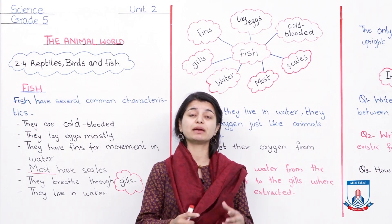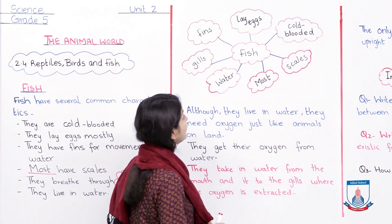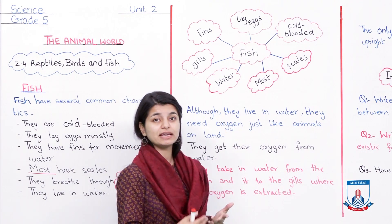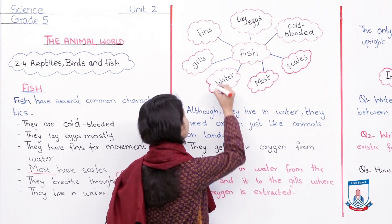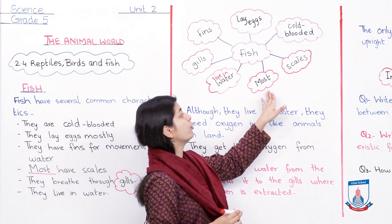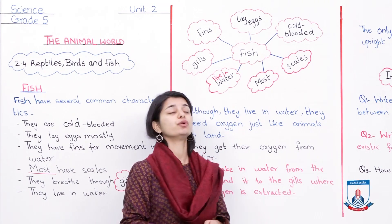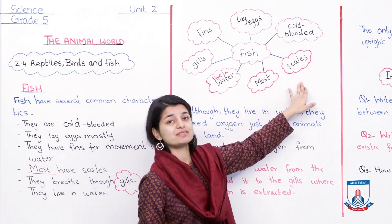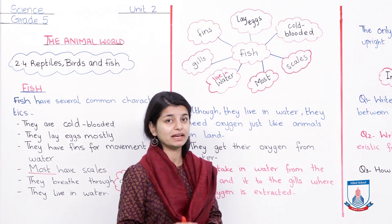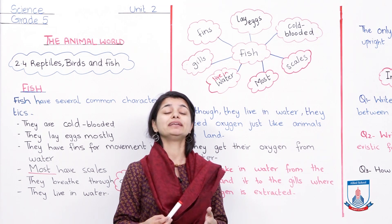We have drawn a web diagram so we can review the features of fish and remember them easily. The characteristics are: they are cold-blooded, they lay eggs, they have fins for movement, they breathe through gills which extract oxygen, and they live in water. Most fish lay eggs and most fish have scales — not all fall into this category, so 'most' is an important word to use when describing fish.